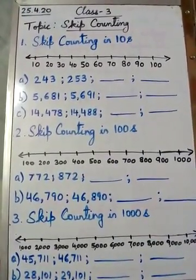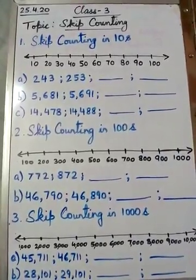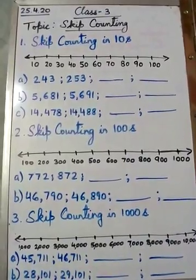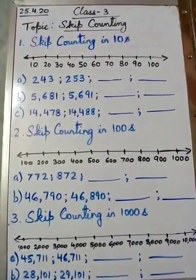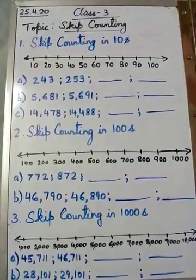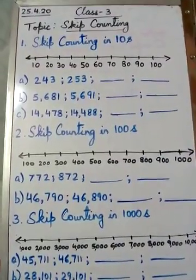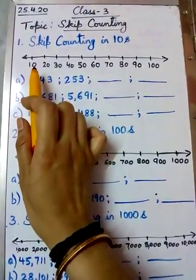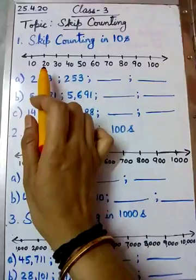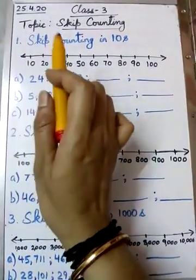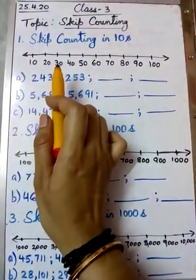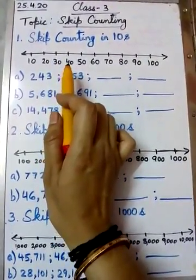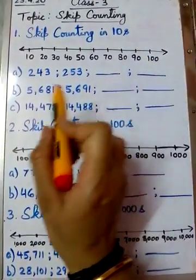Let us learn skip counting in tens. In skip counting in tens, only the digit at the tens place changes. As you know, this is 10. When you skip 10 you come to 20. When you skip 10 from 20 you reach 30. When you skip 10 from 30 you go to 40, and so on.